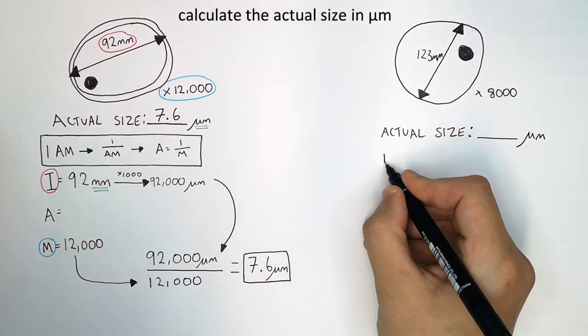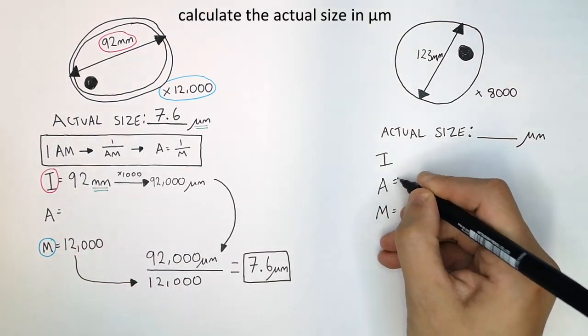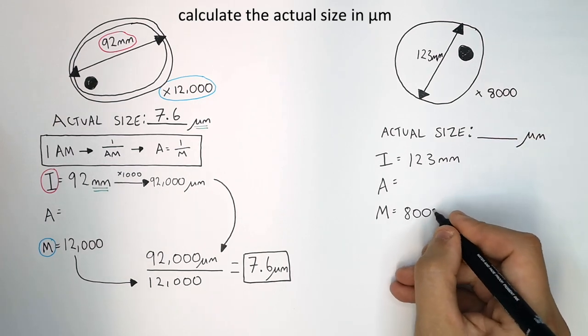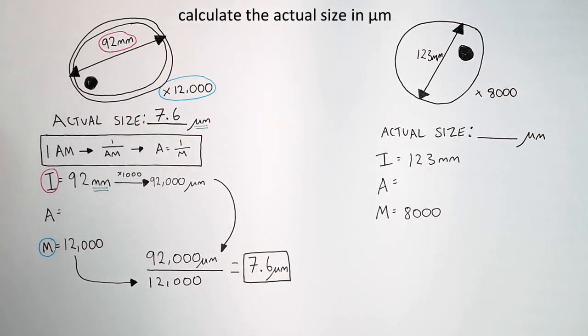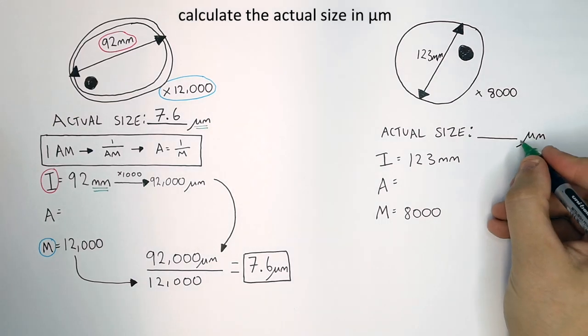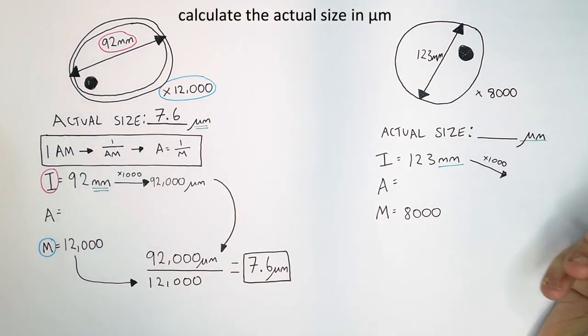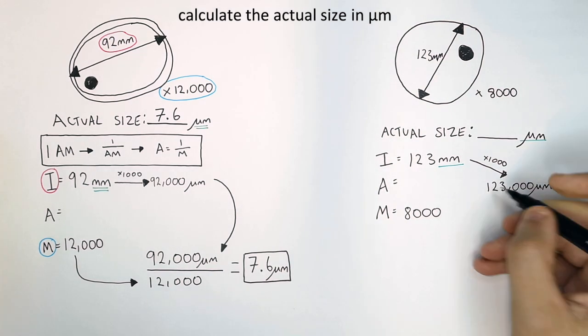You write I, A and M, and you fill in your image size, which is 123 millimeters. Your magnification is 8,000. Now remember, it's going to be converted into micrometers. So you times 123 by 1000, which gives you 123,000 micrometers. You can now divide that by the magnification, which is 8,000.